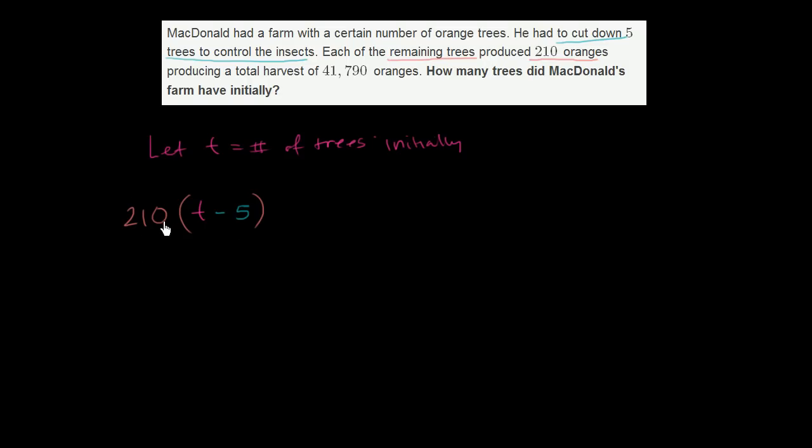So this is the total number of oranges produced after cutting the five trees. And then they tell us that this ends up being a total harvest of 41,790. So this is equal to 41,790. So we've set up our equation. Now we just have to solve for t, the number of trees that McDonald initially had.